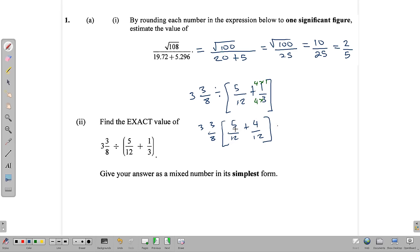So once we rename it, we end up with 3 and 3 eighths divided by 5 twelves plus 4 twelves. And from the bracket 5 plus 4 is 9. That's 9 twelves. And we can simplify this. Dividing by 3, we get 3 quarters.